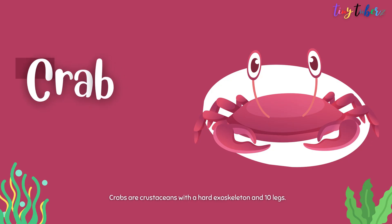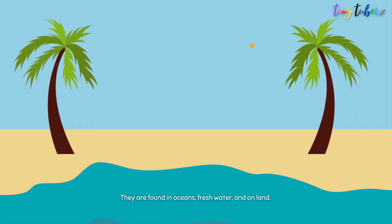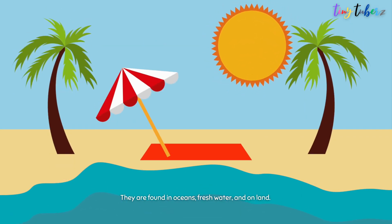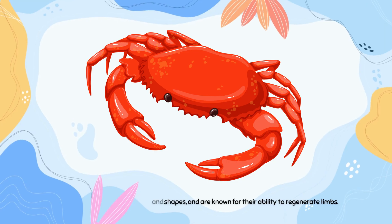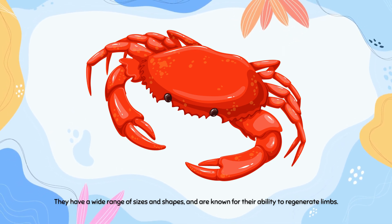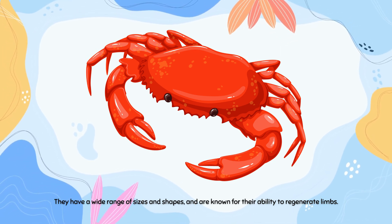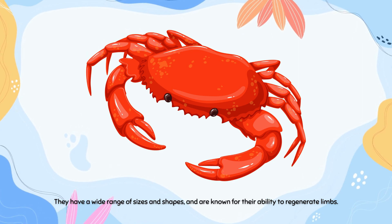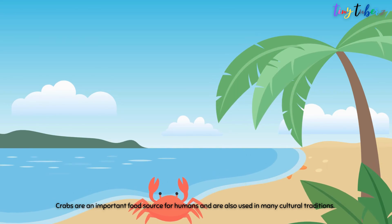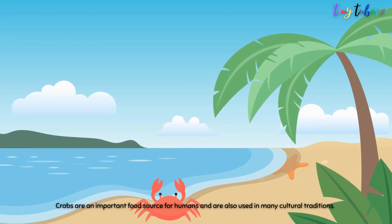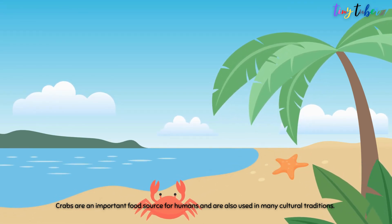Octopuses are crustaceans with a hard exoskeleton and ten legs. They are found in oceans, fresh water, and on land. They have a wide range of sizes and shapes, and are known for their ability to regenerate limbs. Crabs are an important food source for humans and are also used in many cultural traditions.